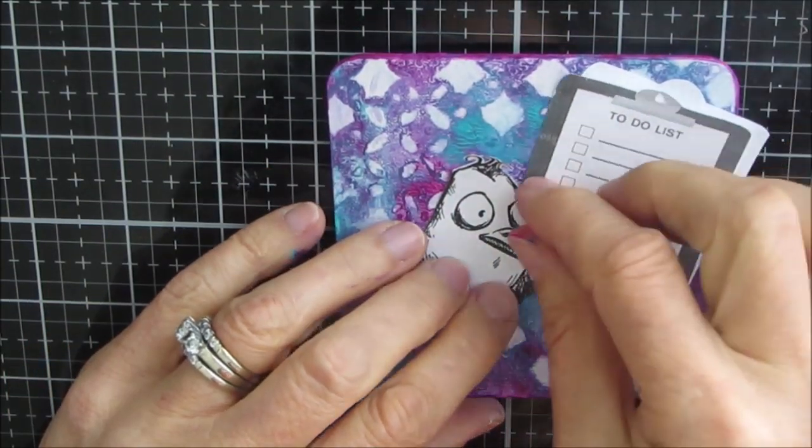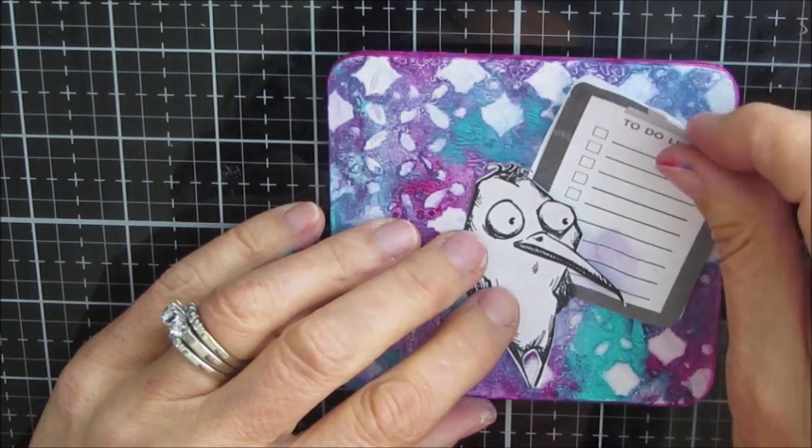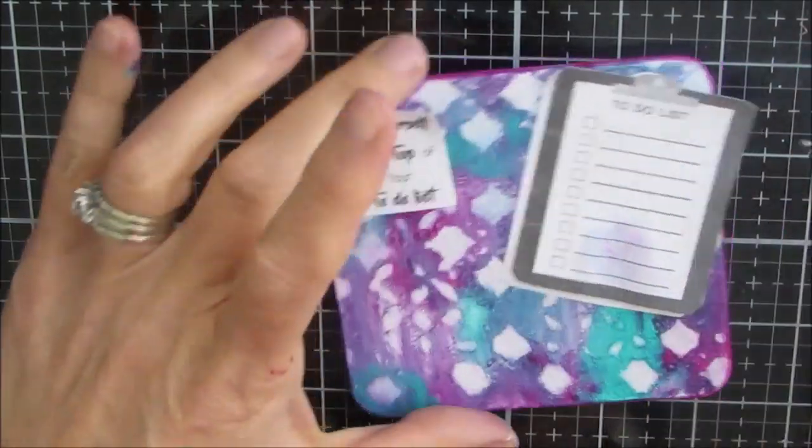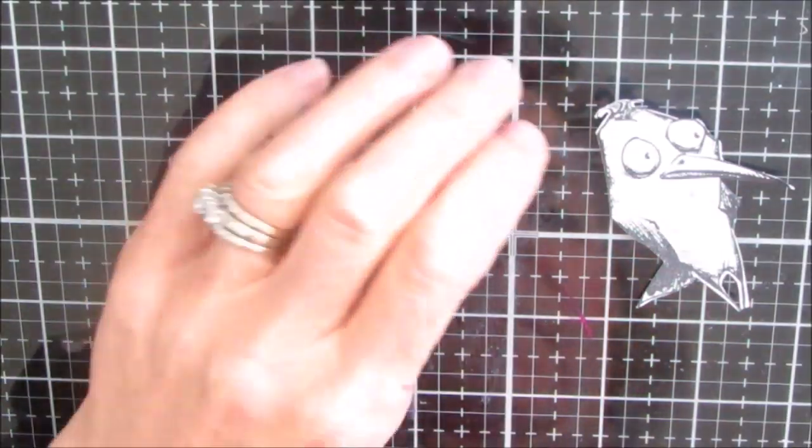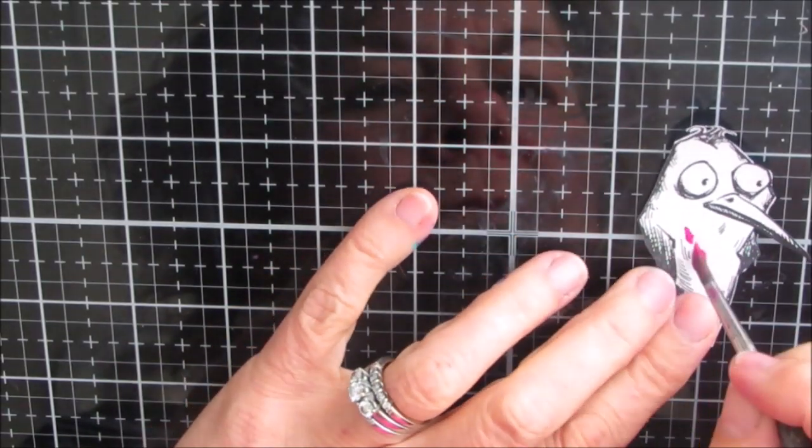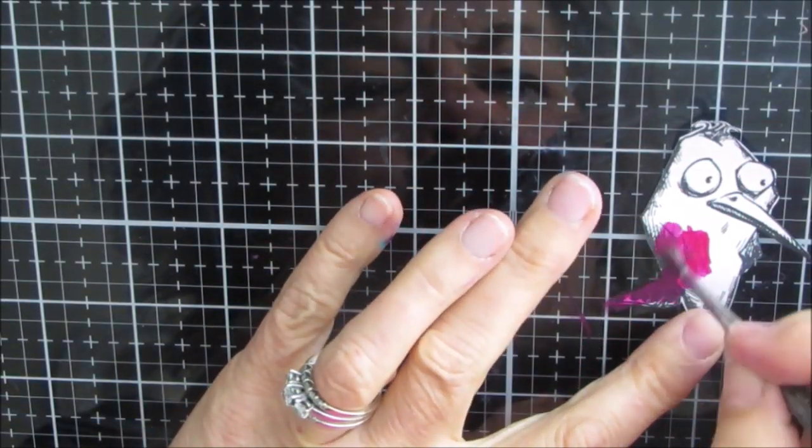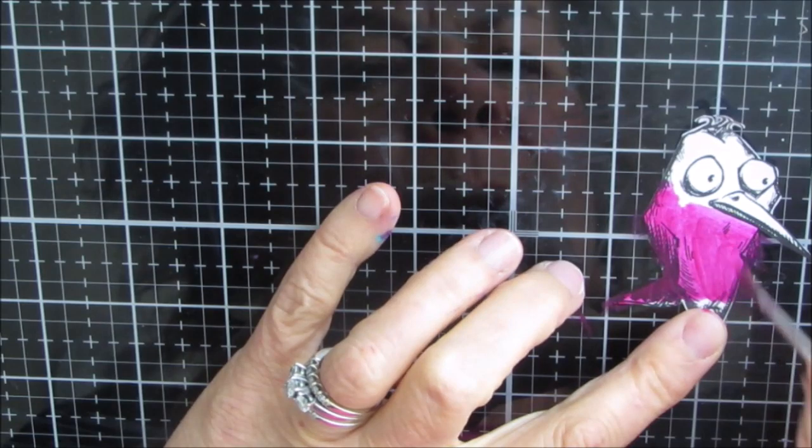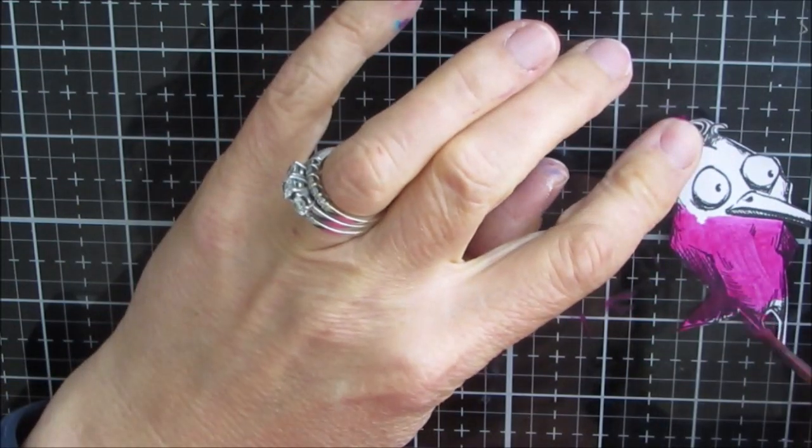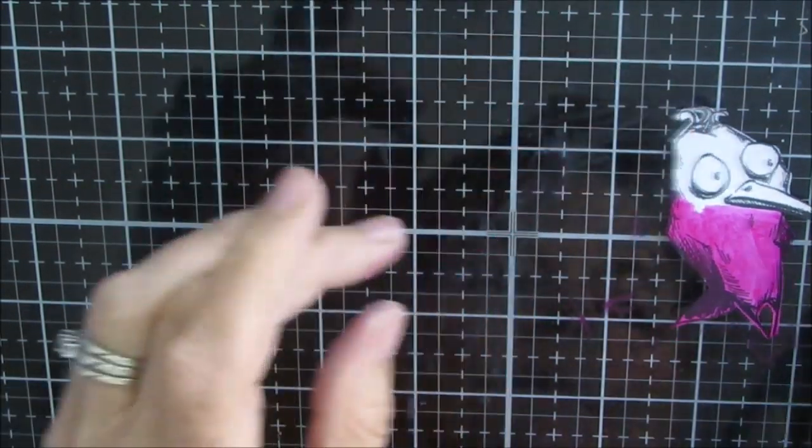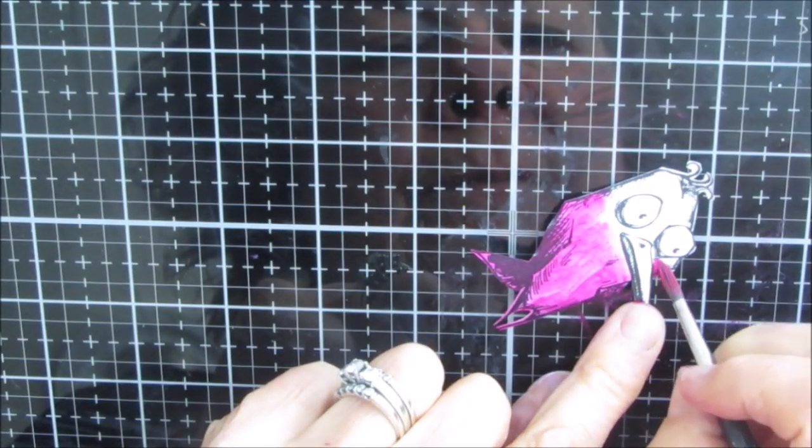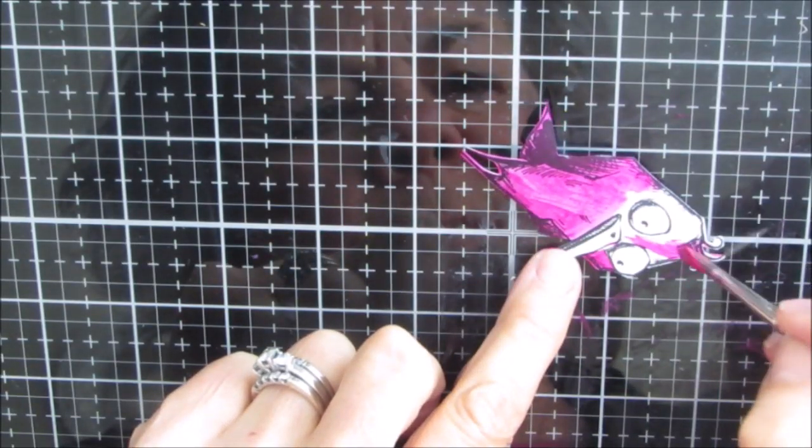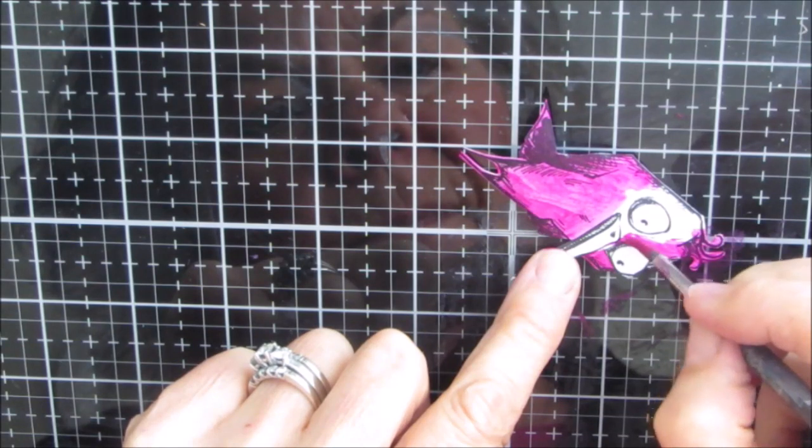So I stamped out the crazy bird, Tim Holtz crazy bird. I have a whole bunch of these stamped out on copy paper that are in my stash, so I have one of those, and I'm going to paint him or her, of course, magenta to go with the theme. But you can make this very same one with any color combination. But what you're going to notice here is the colors that I'm using on the focal images are also colors that you find in the background, and that ties everything together.